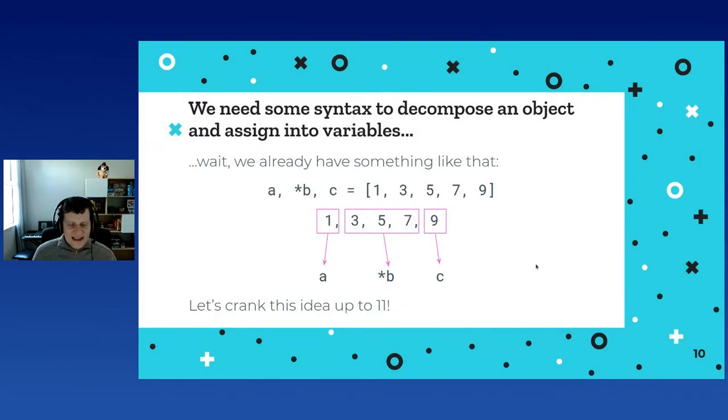And the fun thing is that if we say, okay, we need to invent something about decomposing an object and also assign the different components into variables. And Python, before pattern matching, already has something like that. So if you look at tuple unpacking, or essentially sequence unpacking would be the proper name, for example, I can say, okay, given this sequence, I want to take the first element into a, the last element into c, and everything else into b with this description a comma star b comma c. And this will disassemble my sequence. It will check that it has at least two elements, and it will capture the proper elements in the proper variables. So pattern matching is cranking up this idea up to 11, and that's what we will do.